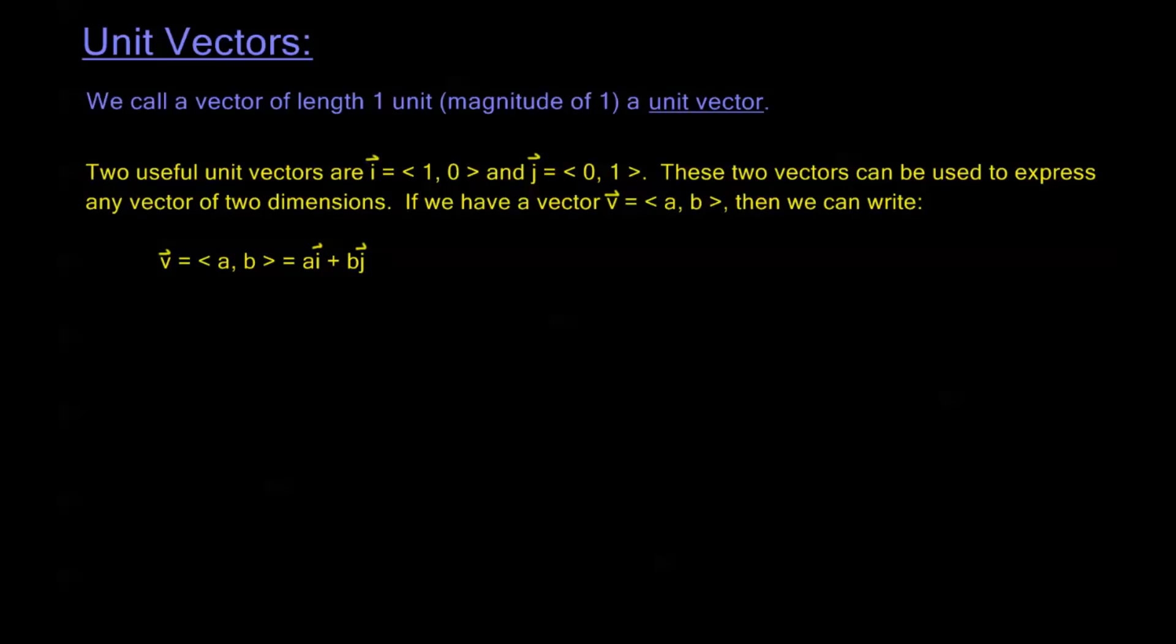If we have this vector V equal to <a,b>, we can write V as A times I plus B times J. Let's take a look at this very quickly. This comes from the fact that if we have this vector <a,b>, from our addition operation we know this is the same thing as the vector <a,0> plus the vector <0,b>.